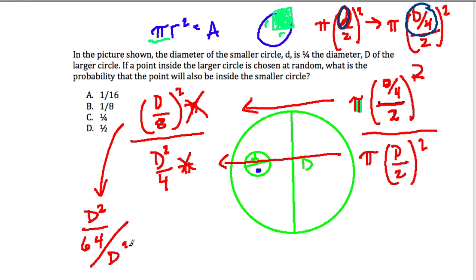Over D squared over 4. Over D squared over 4. And what's that? Well, I want to multiply numerator and denominator by 4 over D squared. 4 over D squared.